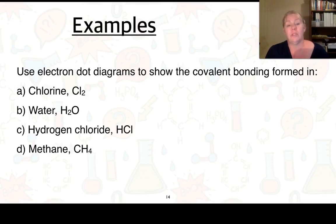So we've got some, I want to use some examples here of some electron dot diagrams to show the covalent bonding formed in chlorine, hydrogen, hydrogen chloride, and methane. So on this next screen, we will draw these up.